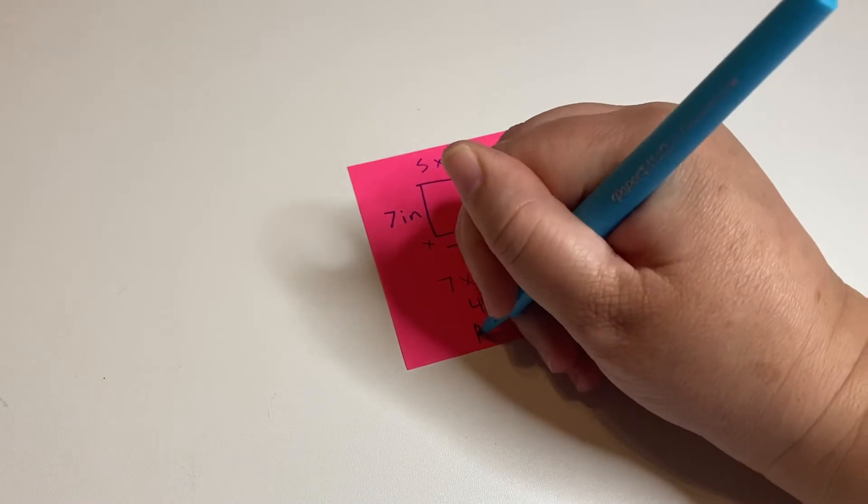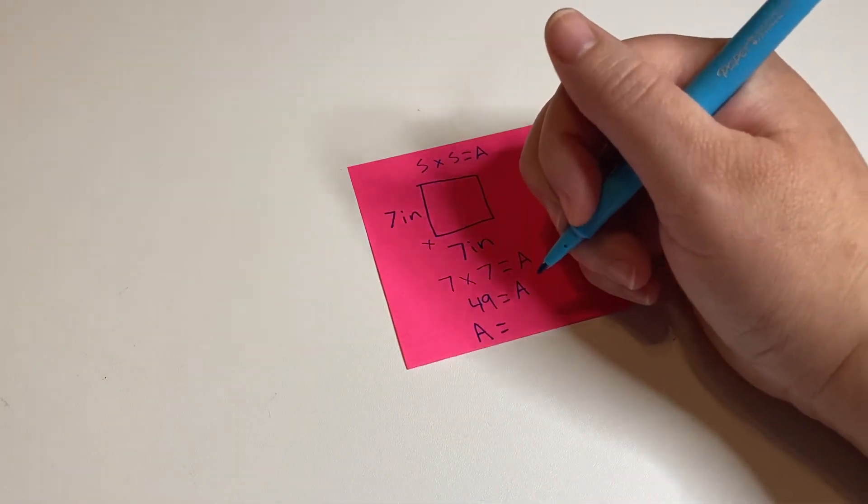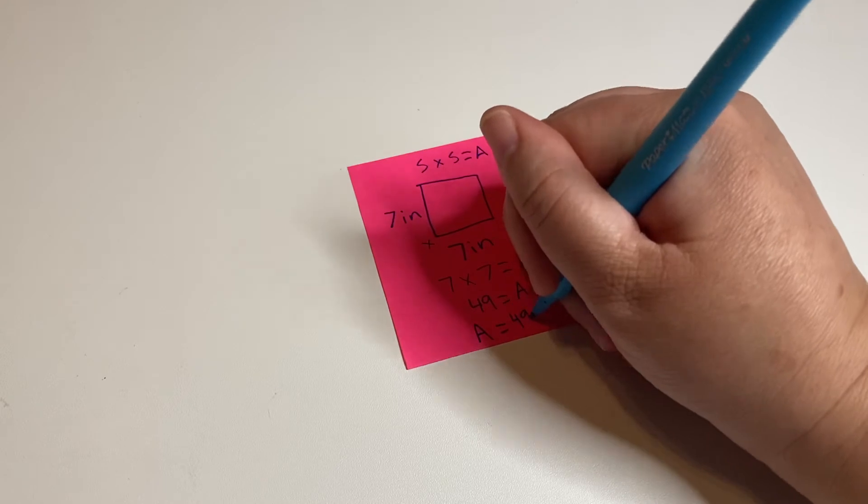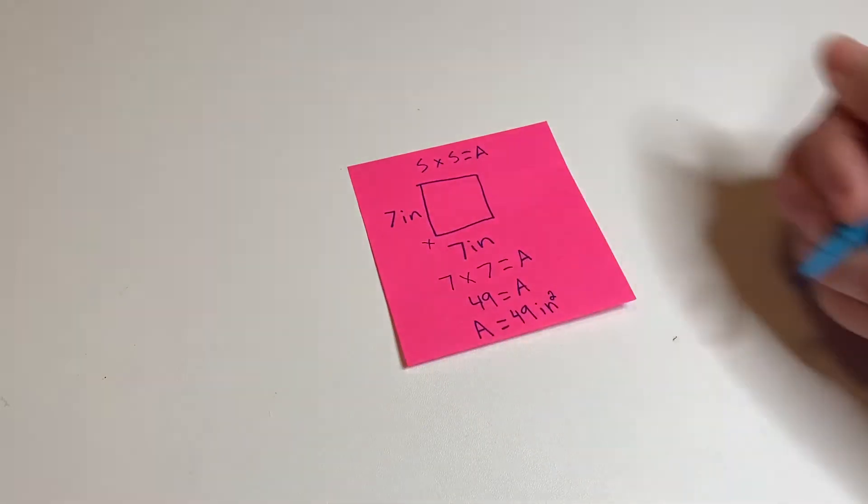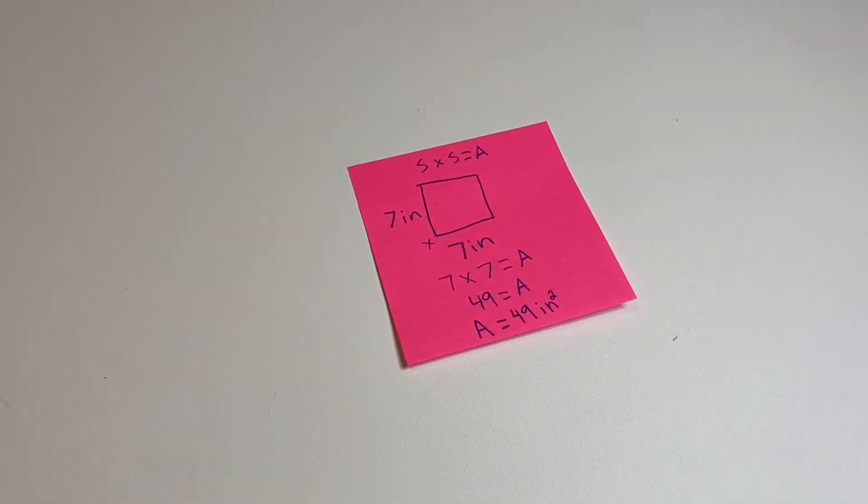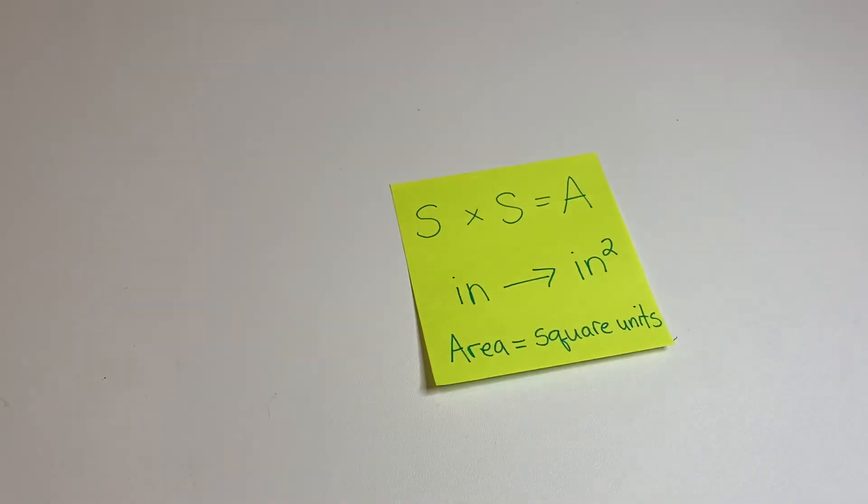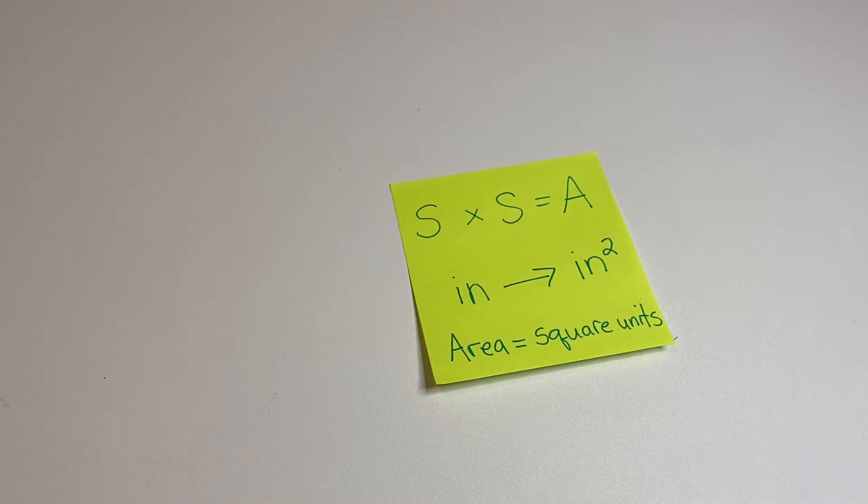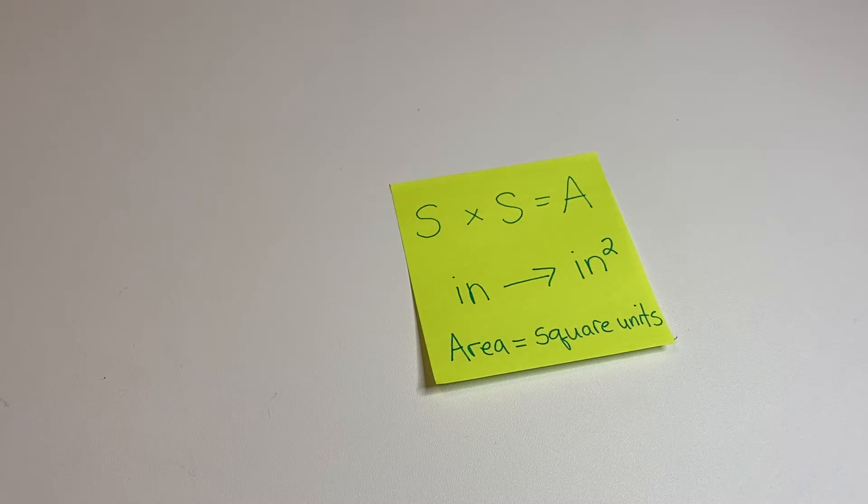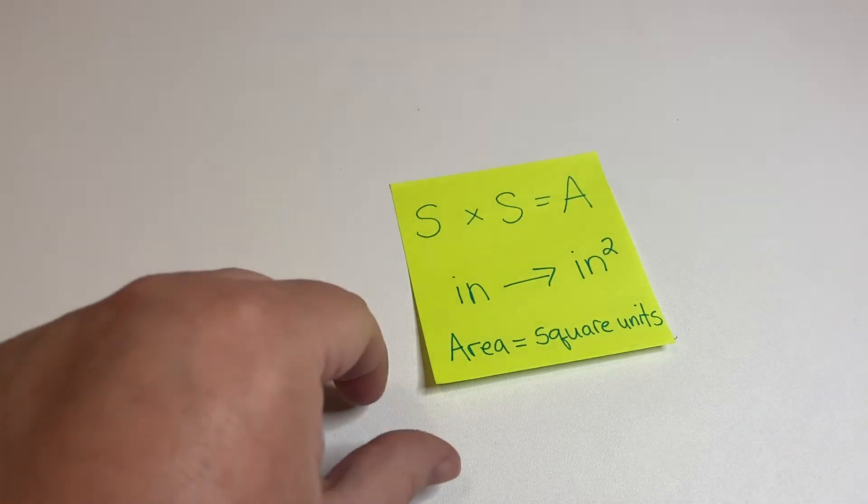It's equal to the area, and I'm just going to move it over here. A is equal to 49, and we're going to call that inches squared. Okay, so we have side times side equals area, and we've got our inches becoming square inches. The area is square units. Have I said that enough yet? Hopefully that's starting to be cemented in your brain.